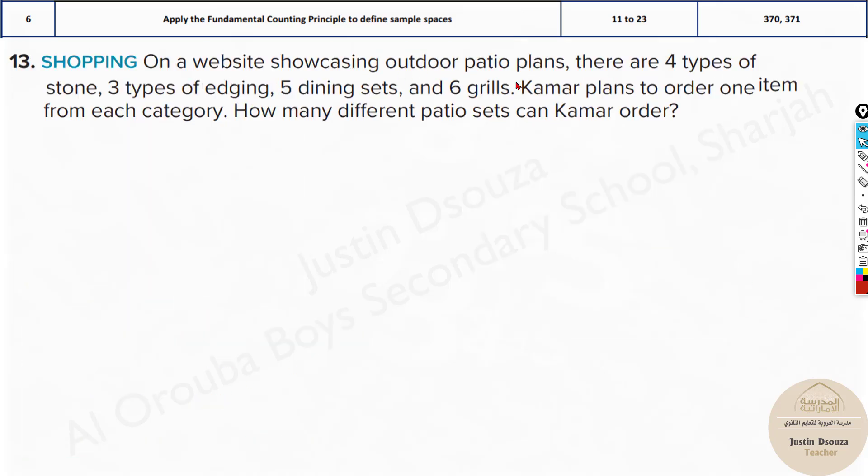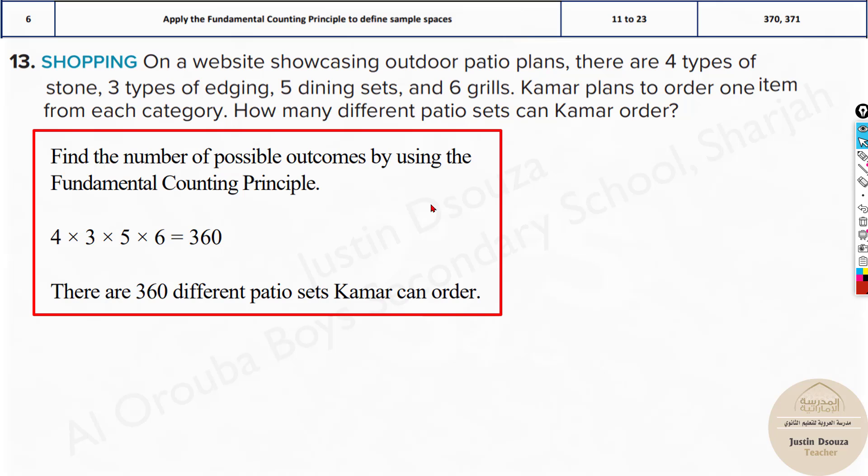This is easily done by multiplying all of them. When you multiply them you get the total possible outcomes. That is the fundamental counting principle. Here in this question, a cafeteria meal at Angela's work includes one choice from each category. All you need to do is multiply them up. On a website showcasing patio plants, there are four types of stones, three types of edging, five dining sets and six grills. Kumar plans to order one item from each category. How many different patio sets can Kumar order? All you need to do is multiply: four times three times five times six.